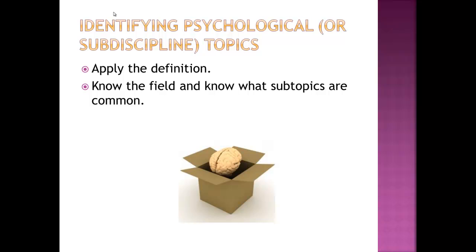You should be very cautious about identifying psychological or sub-discipline topics in psychology. The only thing I can say is: apply the definition. If I ask you for a psychology article, apply the definition of psychology — does that article fit that definition? If you're in IO psych and I say find an IO psych article, apply the definition. Does that article's topic fit the definition of IO psych? You'll be able to do that by knowing the field and knowing what subtopics are common. I'm not going to give you this assignment until a couple of weeks into the semester, so you've been reading the textbook and should start to develop an understanding of what the discipline is.